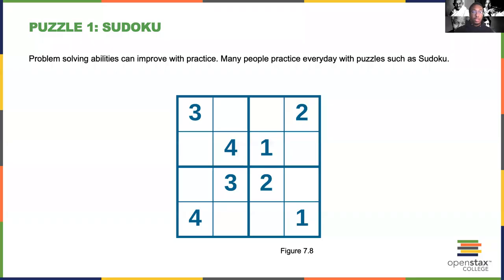Take a look at this puzzle. This type of puzzle is called Sudoku and Sudoku has two very simple rules. Rule number one is that every row and every column must have numbers 1 through 4 in it. And rule number two is that every box, each one of these smaller boxes, must also contain numbers 1 through 4.